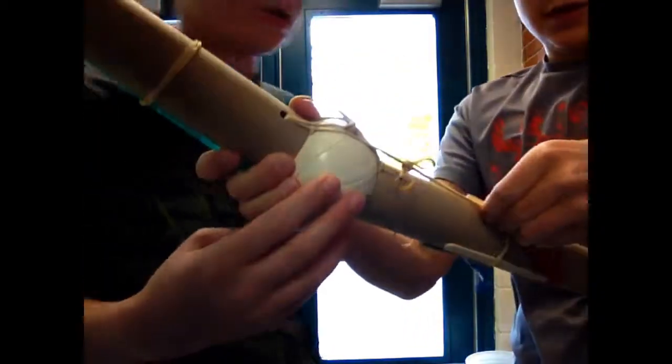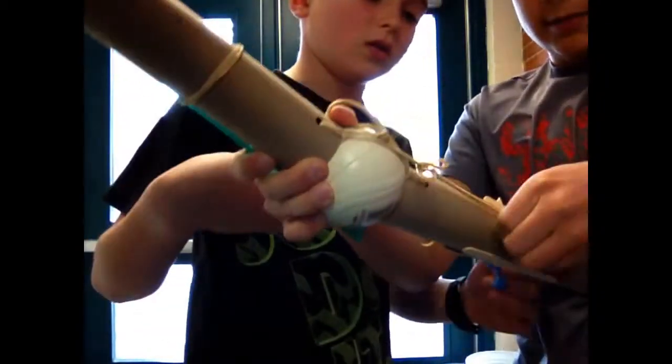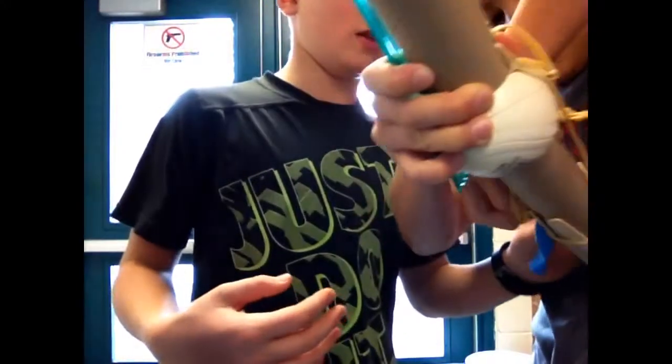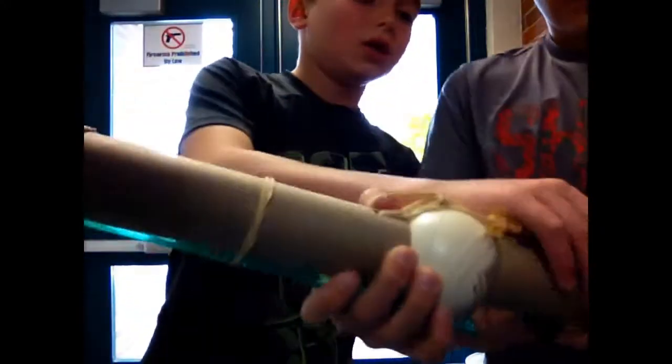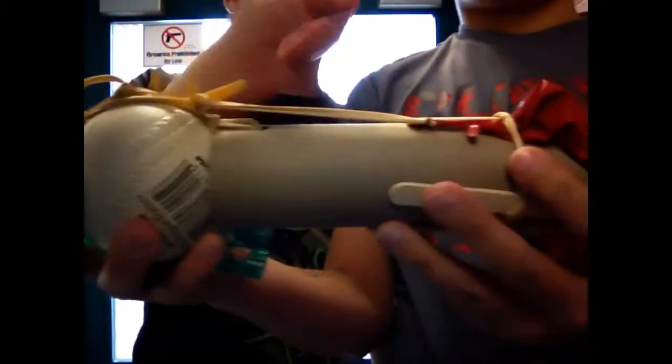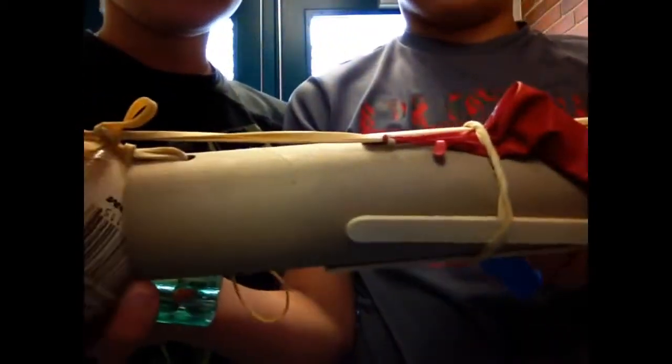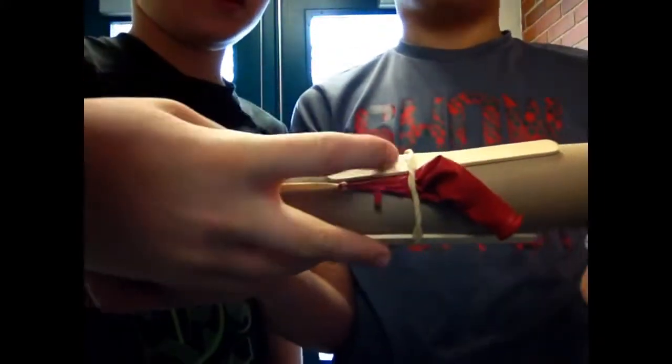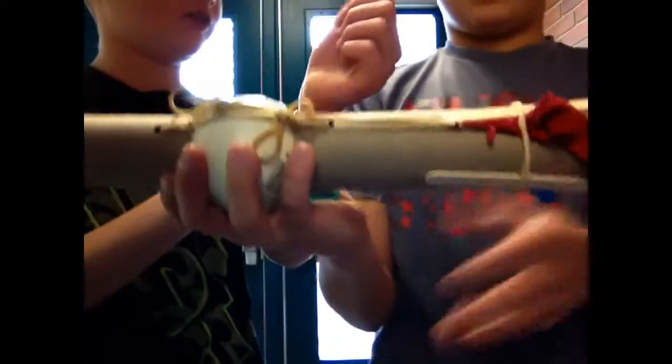And then we're gonna loosen them both up because right now the arm's not doing any work. And then we have these two popsicle sticks that hold the bone in place. These are the second set of tendons. The rubber band and the popsicle sticks make sure that the bone is still attached to the muscle.